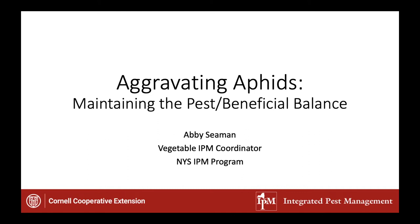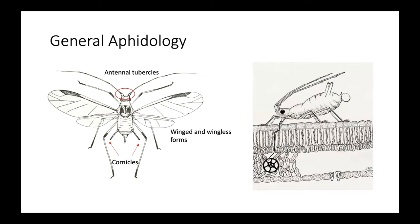Abby Seaman introduces herself as the vegetable IPM coordinator with the New York State IPM program and briefly introduces the next topic: aphids on tomatoes. She'll cover how to recognize aphids and some characteristics used to tell one species from another.